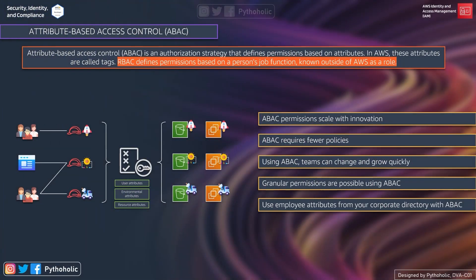Let's talk about the benefits and advantages of using ABAC. First, ABAC permissions scale with innovation. With the growing scale of projects or applications, we can scale our policies without intervention from the admin. If any resource needs to be added, the developer can create the resource with the proper tags, and the policy will automatically allow access to it.